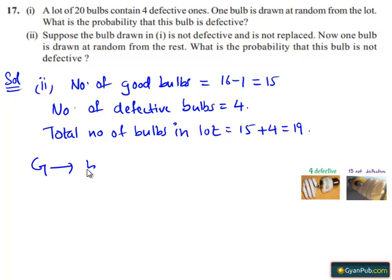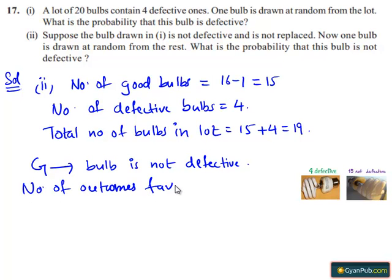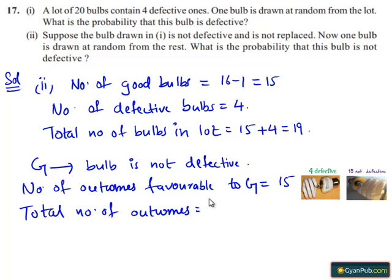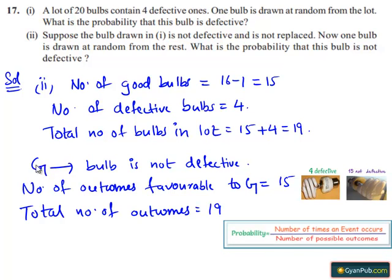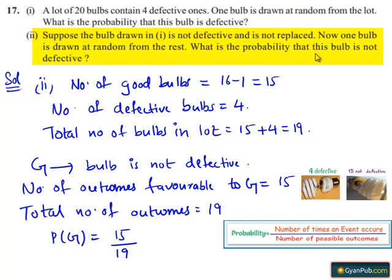Let G be the event that the bulb is not defective. Then, number of outcomes favorable to event G equals the number of good bulbs, which is 15. Total number of outcomes equals total number of bulbs left in the lot, i.e. 19. Therefore, P of G equals 15 divided by 19. The probability that the bulb is not defective is 15 divided by 19.